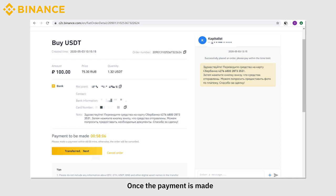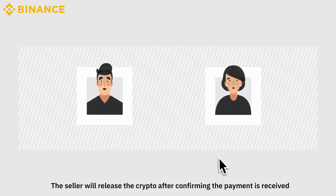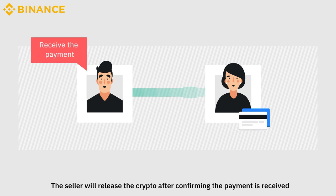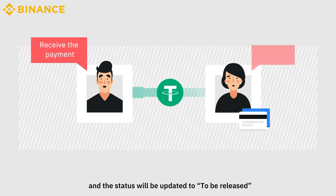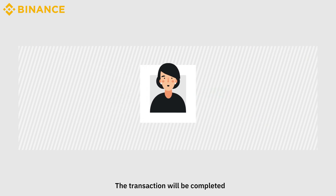Once the payment is made, click on Mark as Paid and then Confirm. The seller will release the crypto after confirming the payment is received, and the status will be updated to To Be Released. The transaction will then be completed.